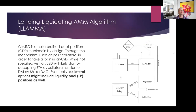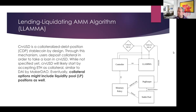AMM stands for Automated Market Maker — we'll look at that in our next lecture. In the case of CRV USD, collateral is not liquidated in one white event as a one-time event. Instead, it starts slowly converting from collateral to the stablecoin — it's sold a little bit to improve the collateralization ratio. That's the key innovation brought by the Curve protocol in their new stablecoin, which they call the LLAMMA.